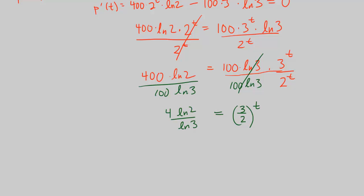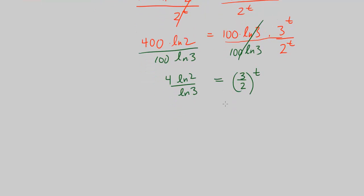We're solving for t, so let's go ahead and divide both sides by 100 ln of 3. These cancel out, we're left on the right, 3t over 2t, well since they both have the same base, this is just 3 over 2 to the power of t, is equal to 4 ln of 2 over ln of 3.